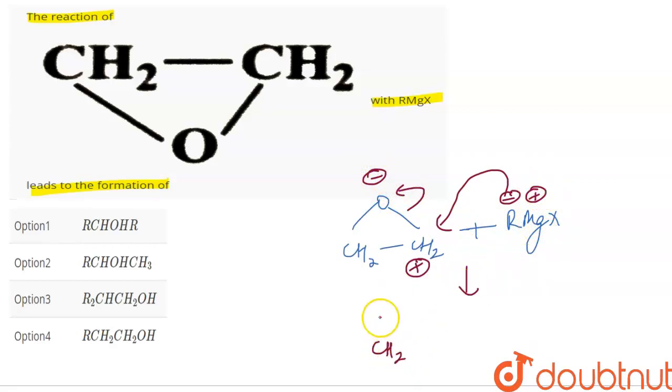And the positive with oxygen negative. So this will become CH2O minus MgX positive, oxygen negative. And here it will be CH2R. You know that for work up we have directly CH2, CH2R, and here it will be OH.